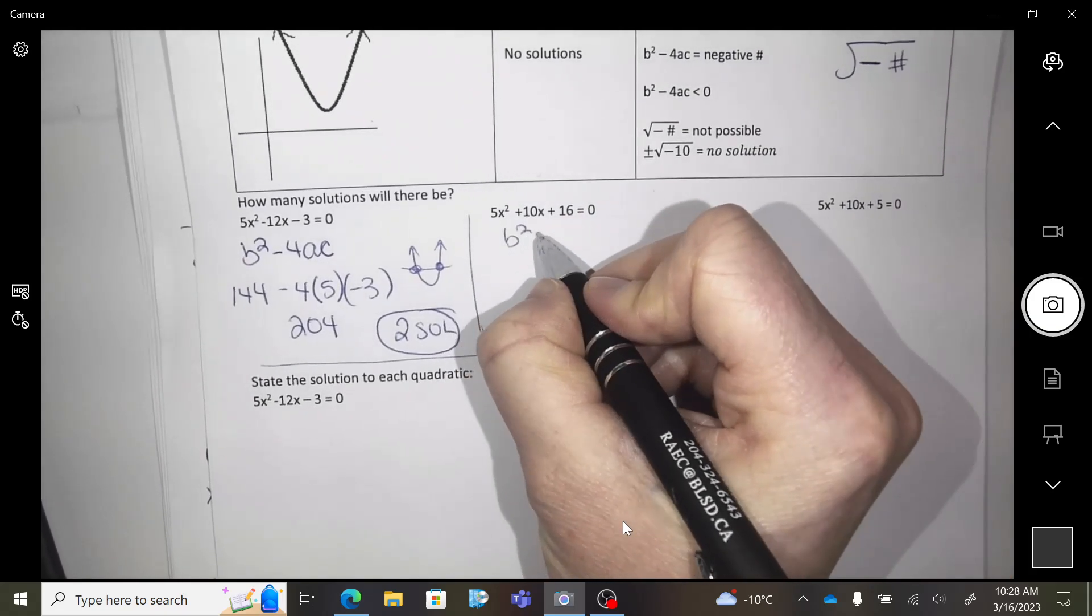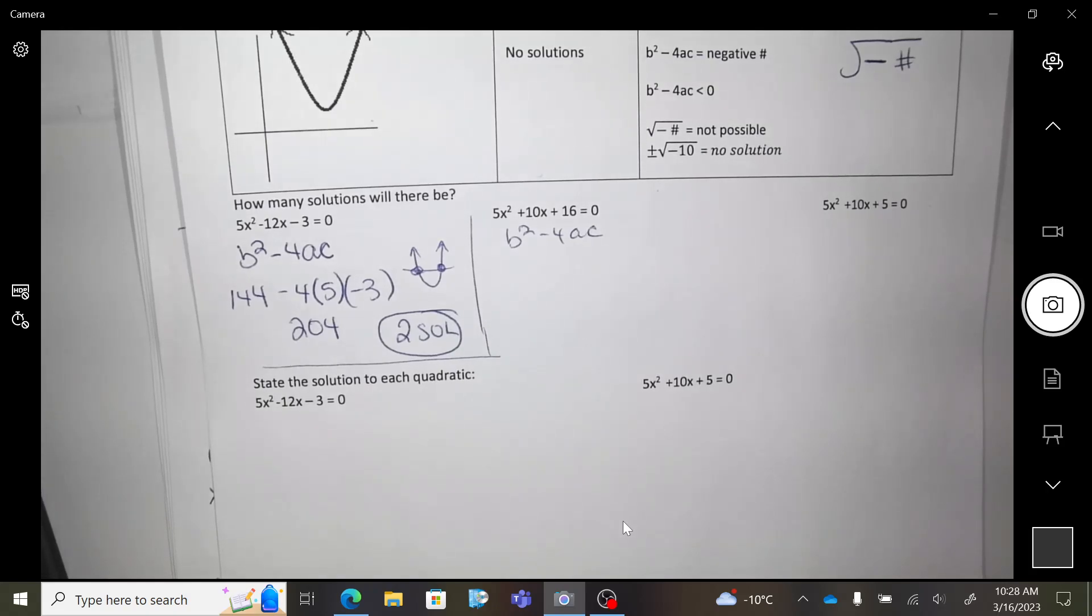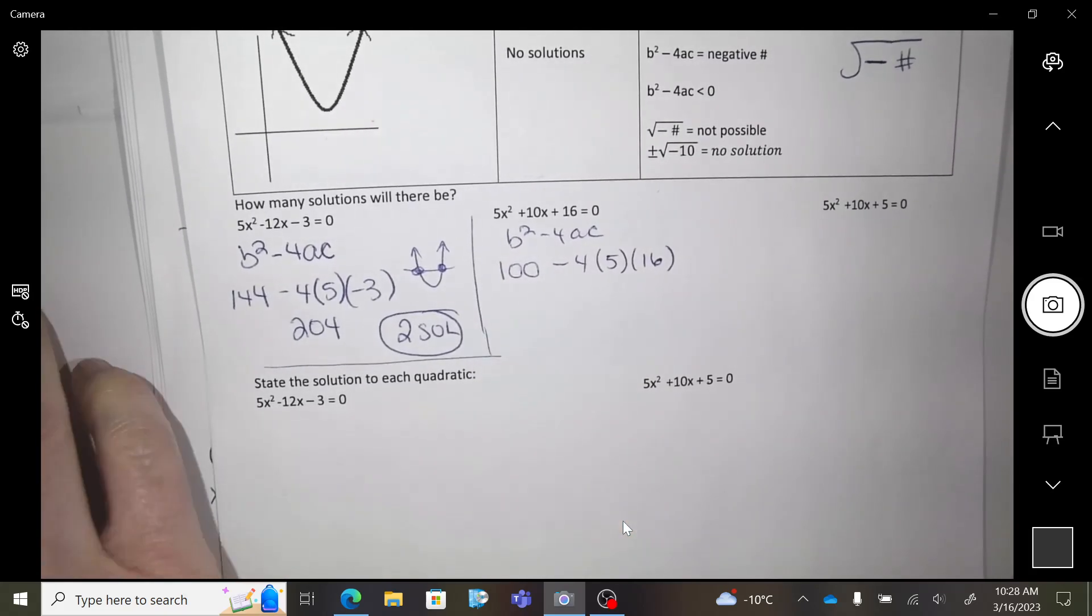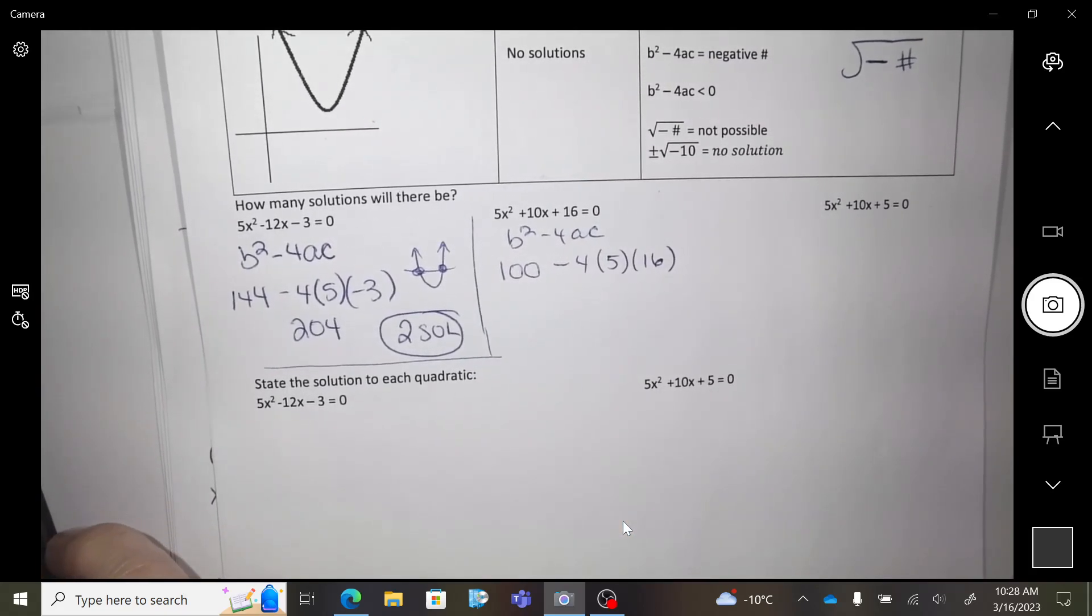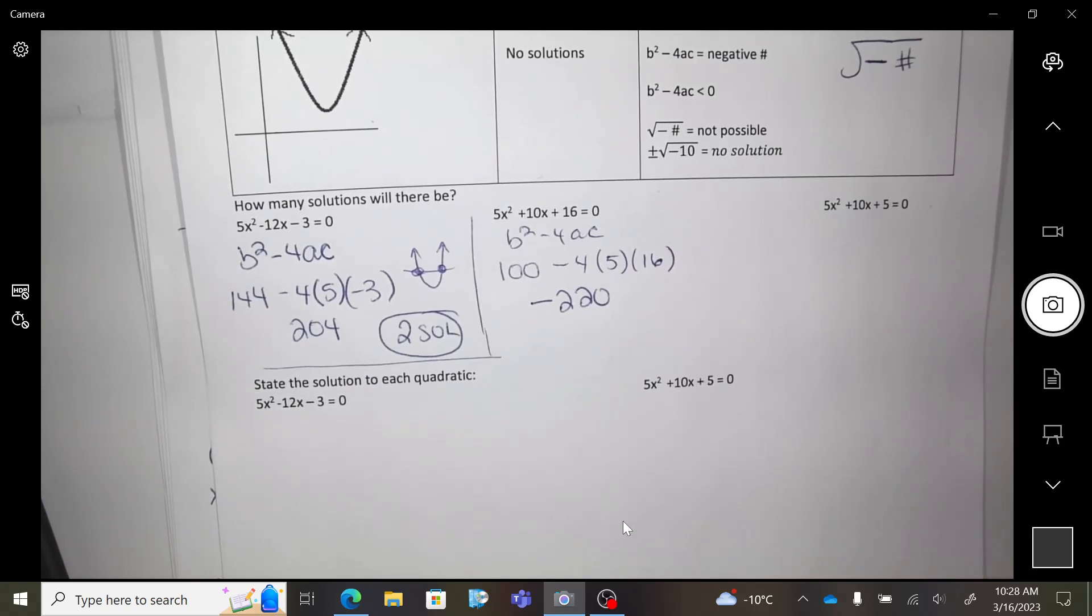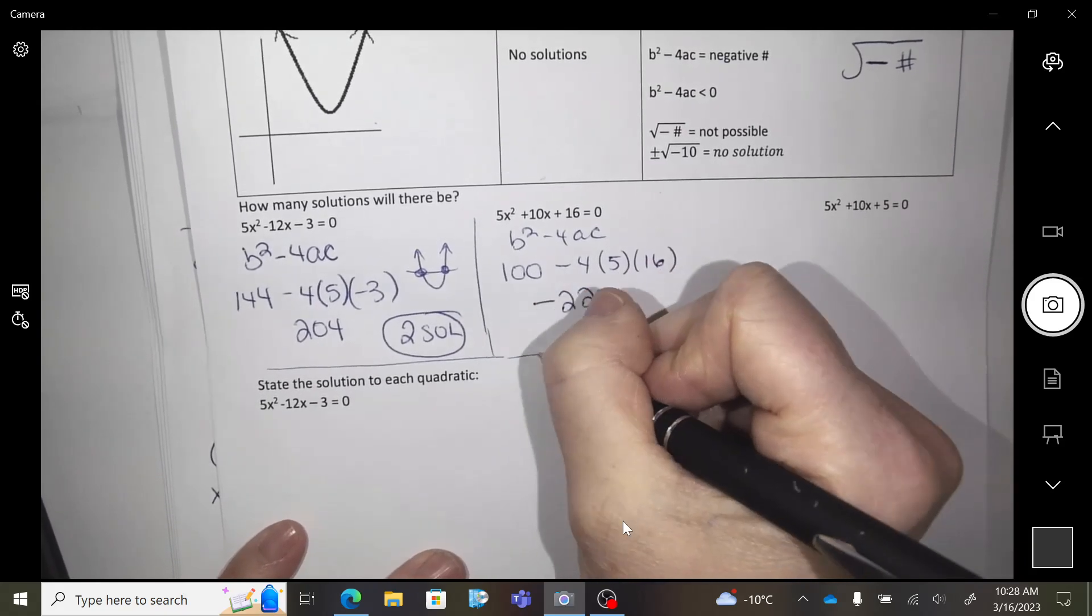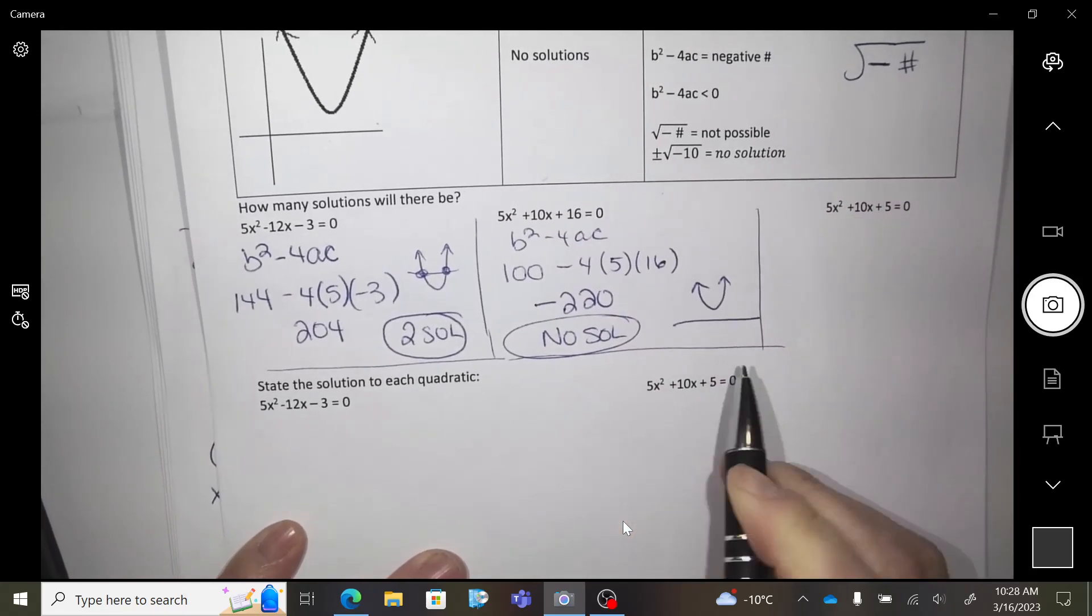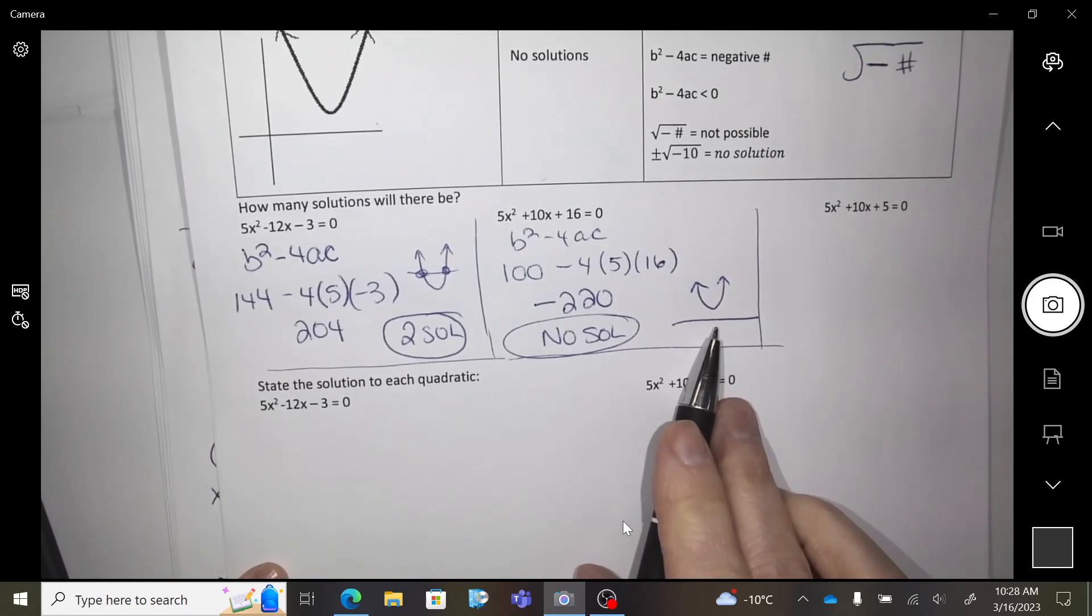Okay. Next one. What is b squared minus 4ac? So b squared is... You're going to do that in your head. 100 minus 4 bracket 5 bracket 16. So I got a negative value, if anybody else is... So what do I know about this parabola? How many x-intercepts will it have? Zero. It will have no x-intercepts. It'll be a parabola that looks like this. It will never, ever cross.